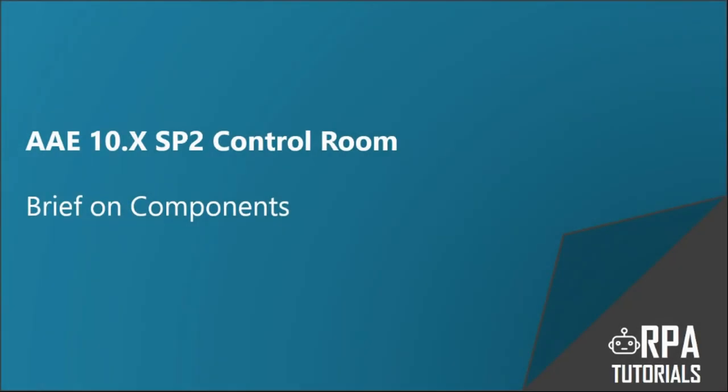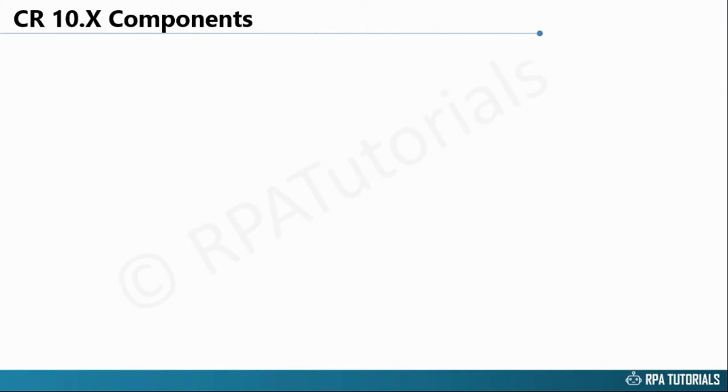Dear friends, welcome to RPA tutorials. In this video, we are going to cover the different components of the new Automation Anywhere Enterprise Control Room in brief. At the time this video was created, the latest version of Automation Anywhere is 10.5.